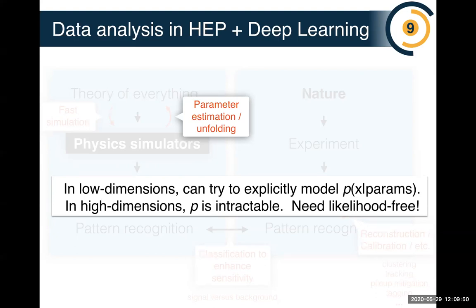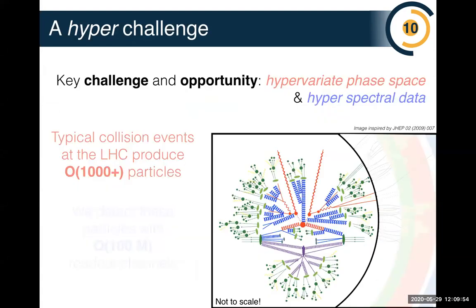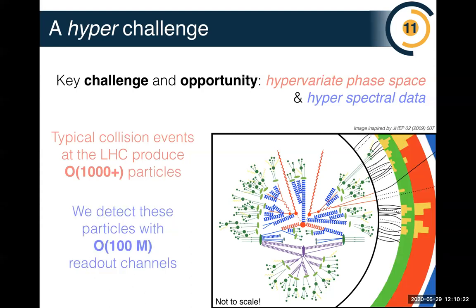I call this the hyper-challenge for two reasons. The phase space we're learning about — the collision debris — is very high dimensional: a typical LHC collision might have a thousand particles, each with momentum and other quantities like electric charge, spanning a variable-dimensional huge phase space. Those particles then hit our detector, which is basically a hyperspectral camera with millions of readout channels. This combination of hyper-varied phase space and hyperspectral data is a huge challenge.